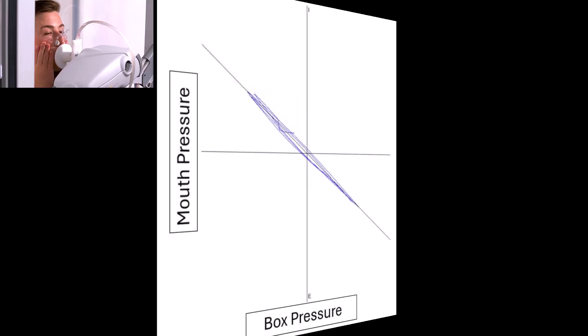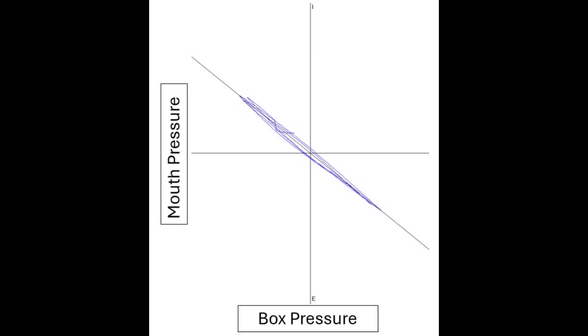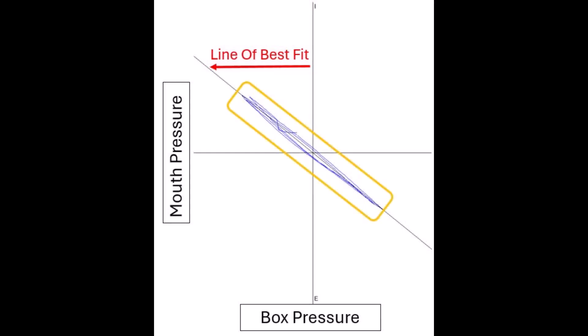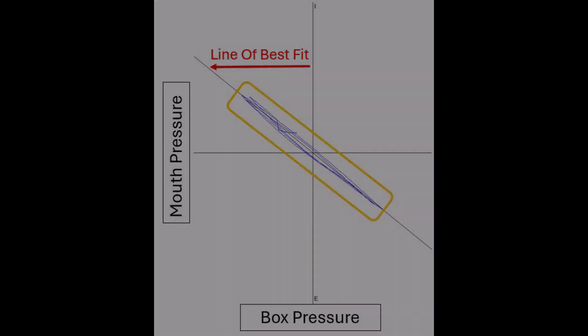When performing lung volume testing, we close the mouth shutter and ask the subject to gently pant. The tracing displayed measures mouth pressure over box pressure. The solid black line that goes through the tracing is called the line of best fit. The computer uses all of the data points from the tracing and places the line of best fit through the average of those data points. In general, the line of best fit should be at the same angle or tangent that the blue tracing is at. If the line of best fit is not at the correct angle, then an adjustment is needed.